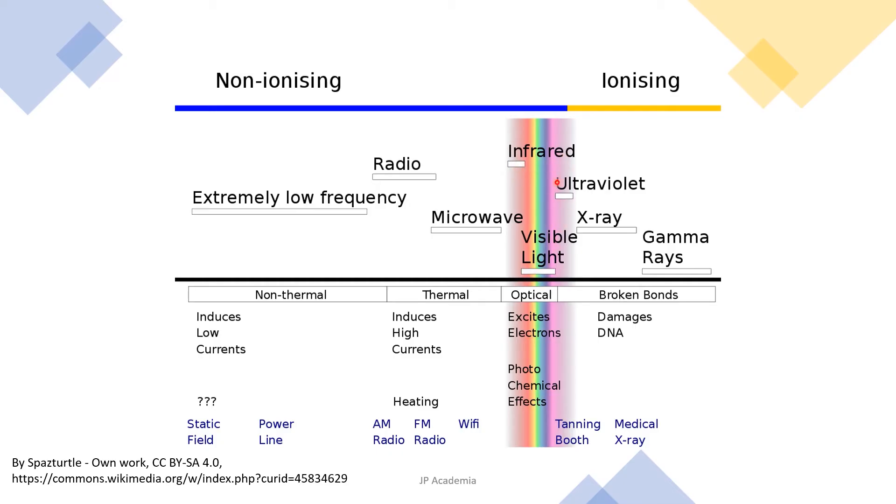Last we have the ionizing radiation. It has enough energy to damage the DNA bonds. It includes the x-ray and the gamma rays.